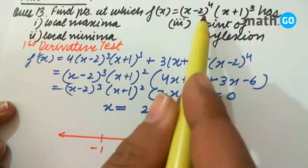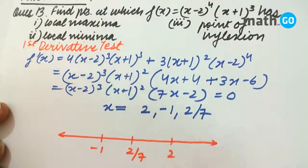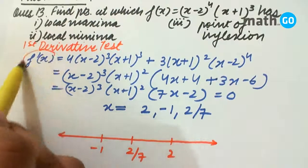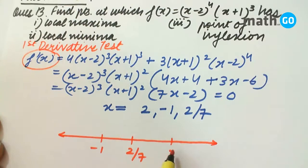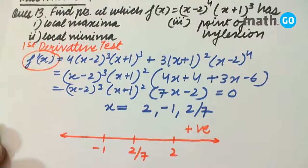We will check for 3. We are checking the sign of f'(x). For example, if we take 3 we will get f'(x) as positive, so here is positive. Between 2 and 2/7 we take any value, for example we take 1, and we find that for 1, f'(x) has a negative value.